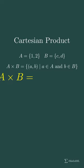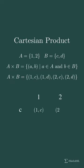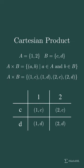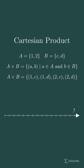For example, the Cartesian product of A and B is this. We visualize the Cartesian product as a grid or a table, where the elements of A are listed on one axis, and the elements of B are listed on the other axis. Each cell in the grid represents an ordered pair.